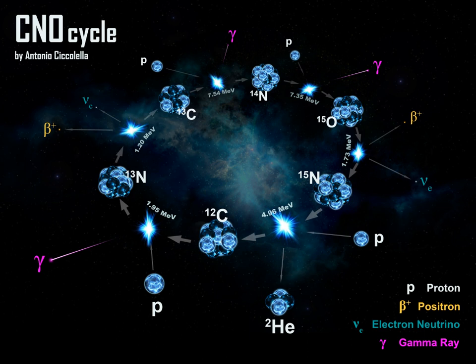See also: Stellar nucleosynthesis, the whole topic. Triple alpha process: How 12 C is produced from lighter nuclei.